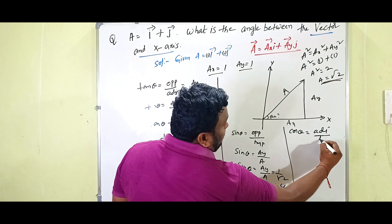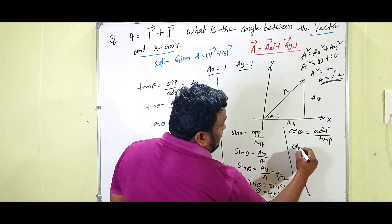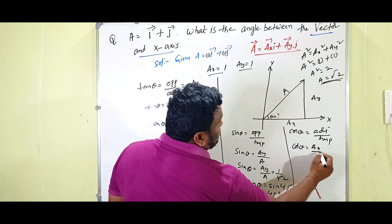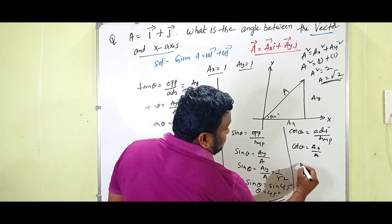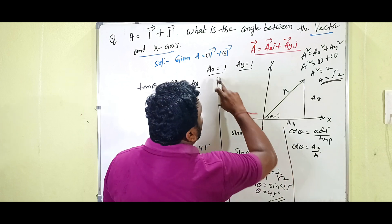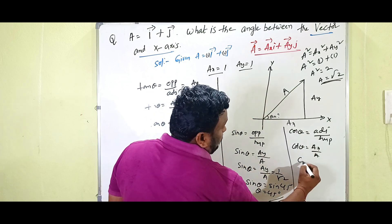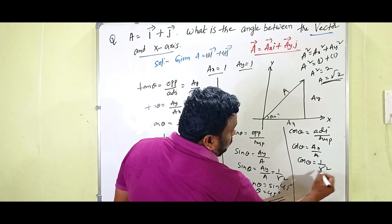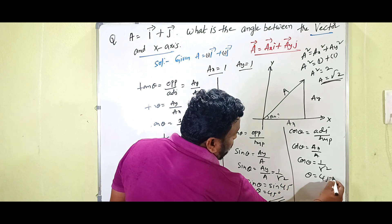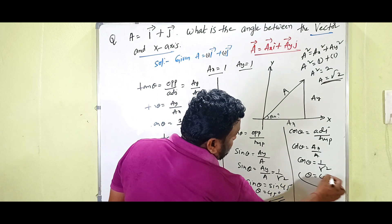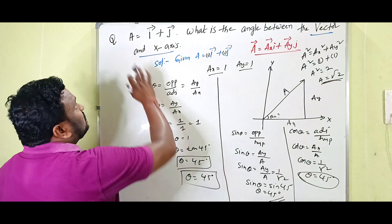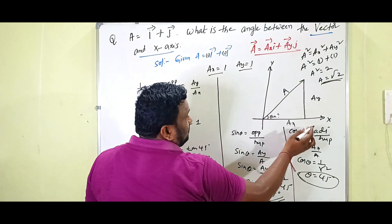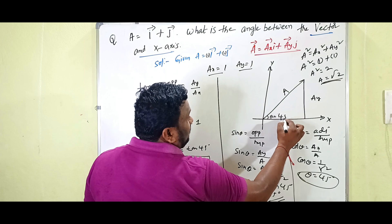Using the cosine method: cos θ equals adjacent side by hypotenuse, which is ax by a. The ax value is 1 and a is root 2, therefore cos θ equals 1 by root 2, giving θ equals 45 degrees. So the angle made by vector A with the x-axis is 45 degrees.